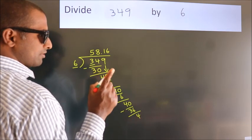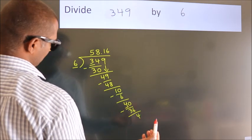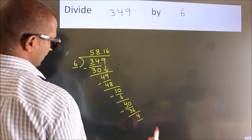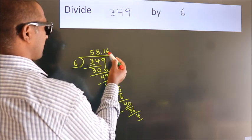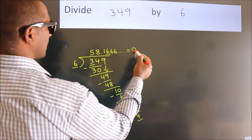Now you observe. We had 4 here and we got 4 again. That means this number keeps on repeating. So this is our quotient.